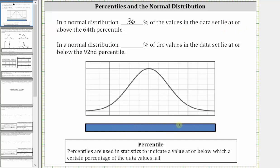For our second example, in a normal distribution, what percent of the values in the data set lie at or below the 92nd percentile?